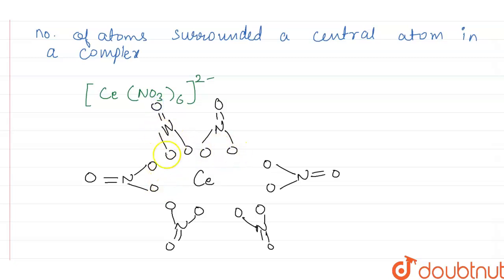We have six nitrate molecules, and two out of three oxygen atoms of each nitrate molecule is bonded with the cerium central atom. So cerium is our central atom, and every two oxygen atoms of each nitrate are bonded with cerium.